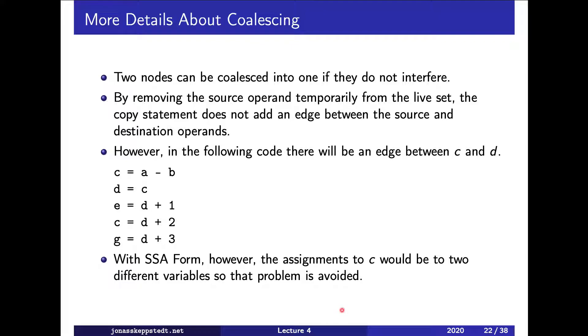As we saw, we remove the source operand. If we assume that c would be in the live set when we construct the interference graph, then we remove it so that there will be no edge in the interference graph between d and c when we go through all variables in the live set at this definition of c.